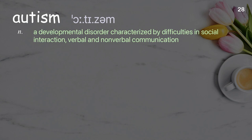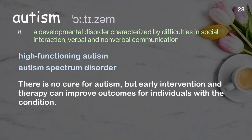Autism: a developmental disorder characterized by difficulties in social interaction, verbal and nonverbal communication. Examples: high-functioning autism, autism spectrum disorder. There is no cure for autism, but early intervention and therapy can improve outcomes for individuals with the condition.